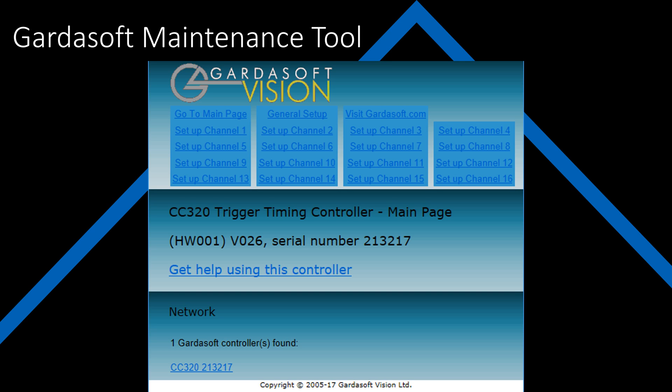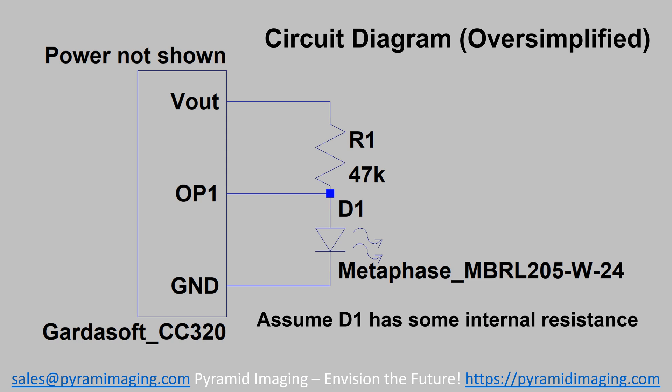Here we can see the main page for the CC320 web interface. I went ahead and hooked up my ring LED using a pull-up resistor to output one. Here's a circuit diagram to represent what I am doing. The power is not shown for the CC320, but as you can see, output one is an open drain. The LED will turn on when output one remains high, but when it drops to low, the LED will turn off.